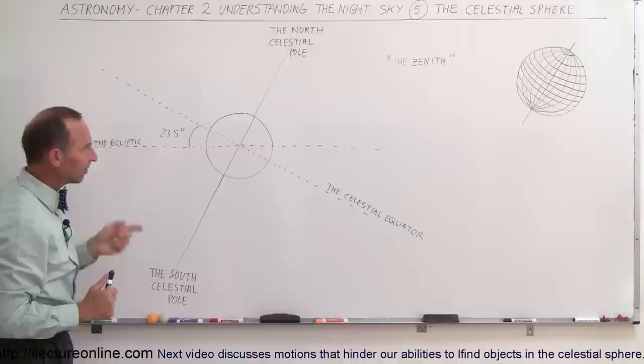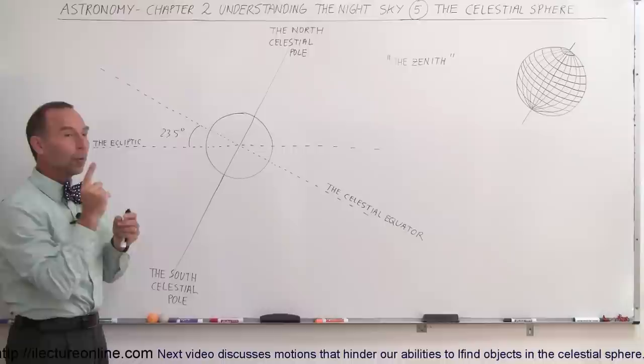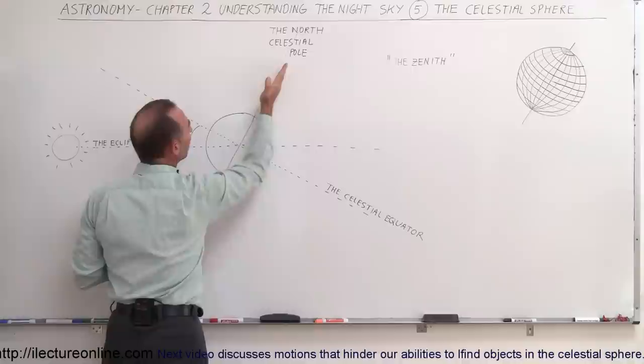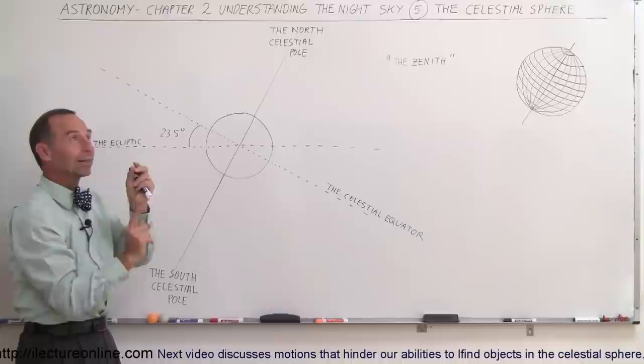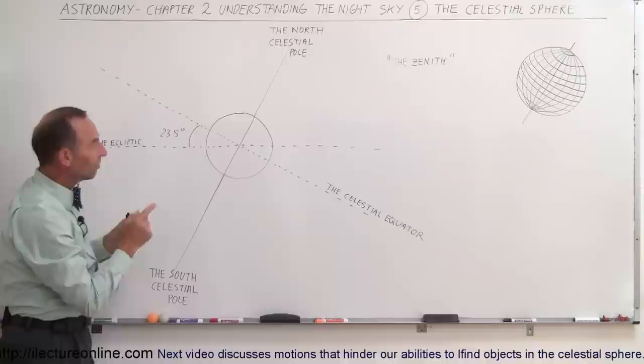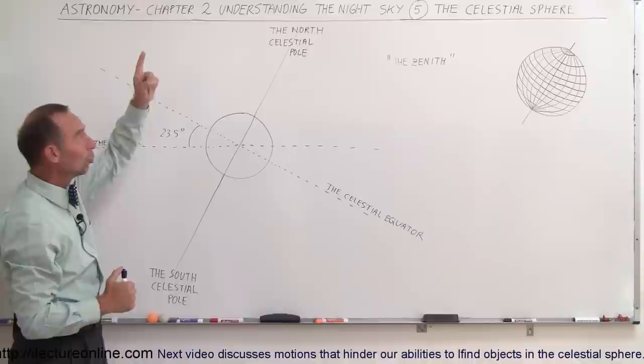The second thing we wanted to do is be able to point to the point directly above and directly below the Earth. So we have the north pole of the Earth, and if we go straight up from there, we reach a point we call the north celestial pole. It's kind of like a line along the north-south pole axis about which the Earth rotates. If we extend that infinitely in one direction and infinitely in the other, we're pointing to the north celestial pole and the south celestial pole.